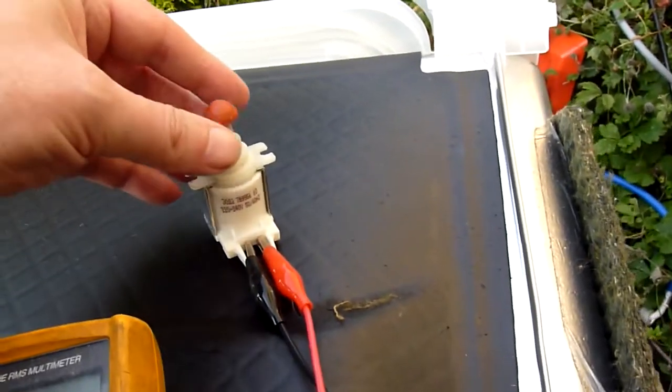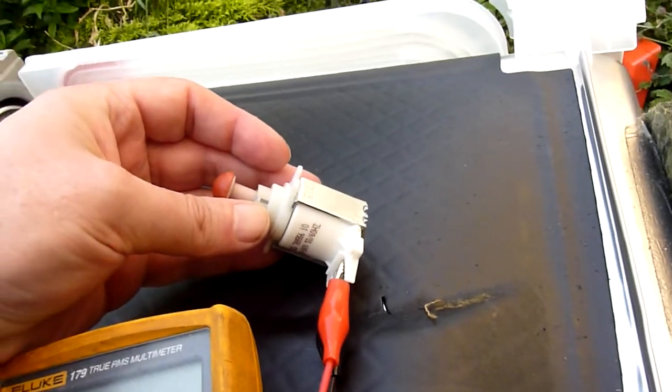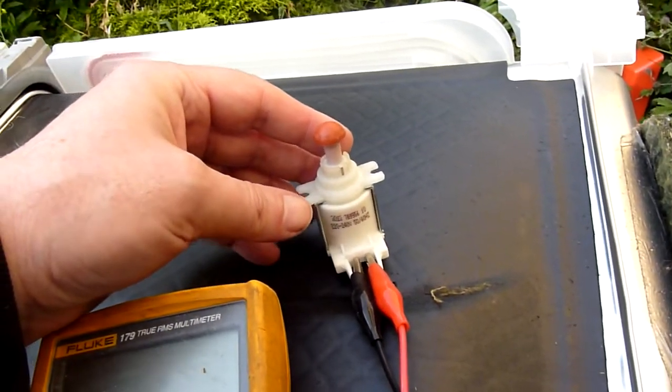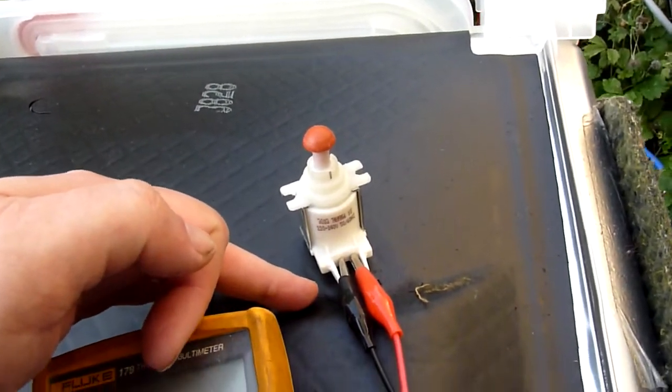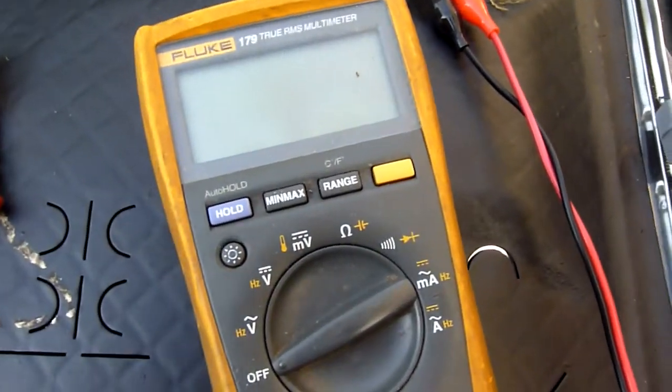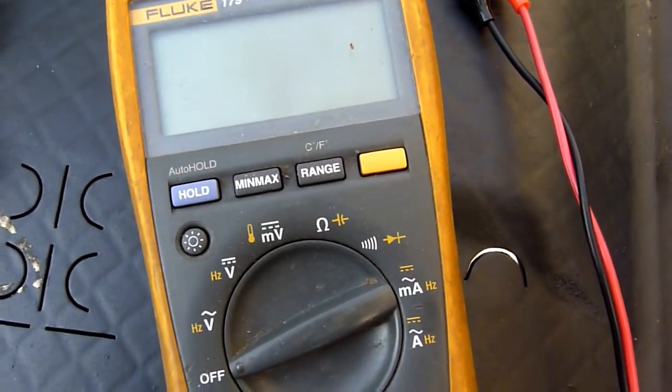What I have here is a solenoid that I've taken out of the Bosch dishwasher. I've attached some crocodile clips and I've got it connected to a Fluke multimeter.